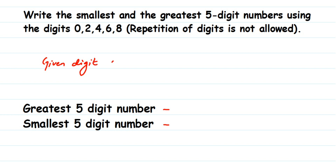The given digits are 0, 2, 4, 6, and 8. The best way to find the smallest number is to write the digits in ascending order. Similarly, when you have to find the greatest five-digit number, you write the digits in descending order.